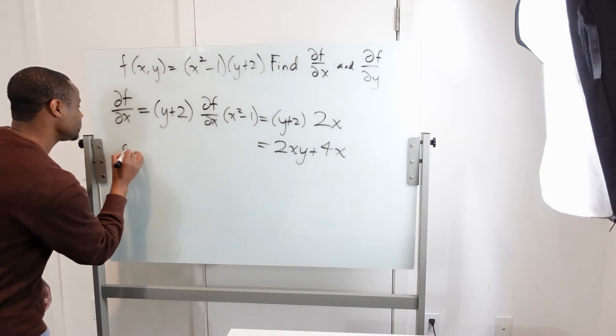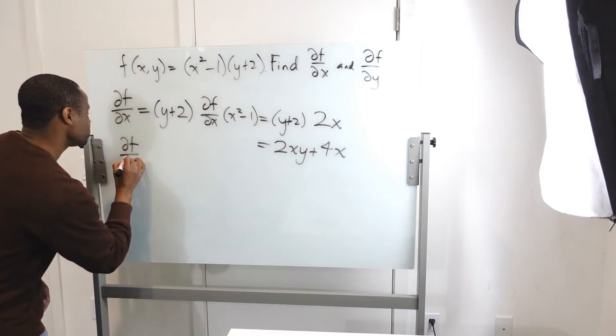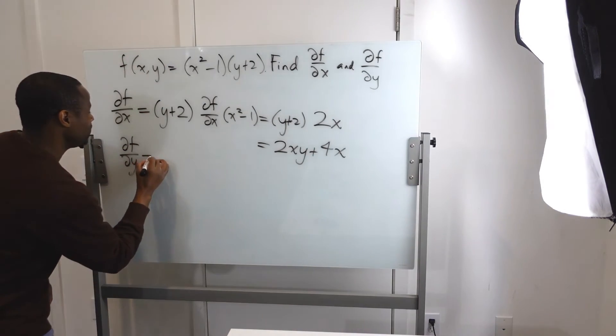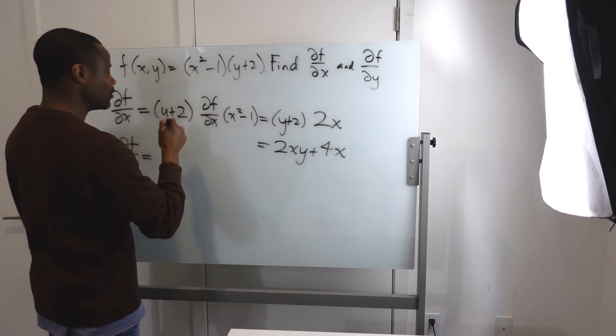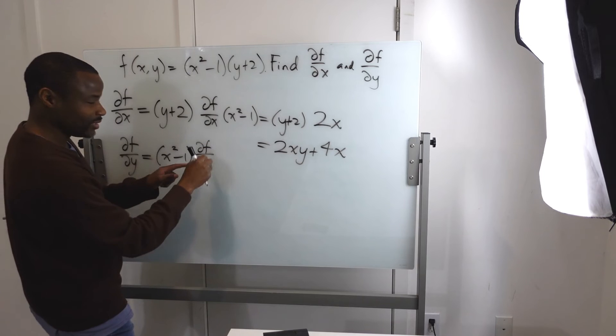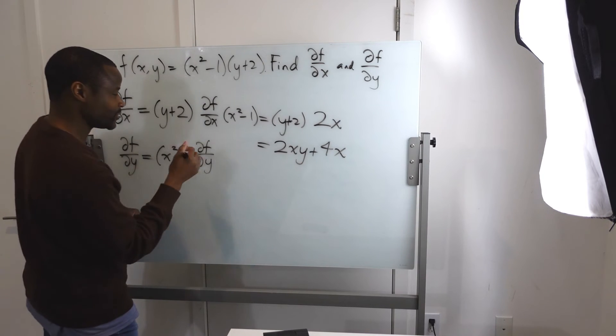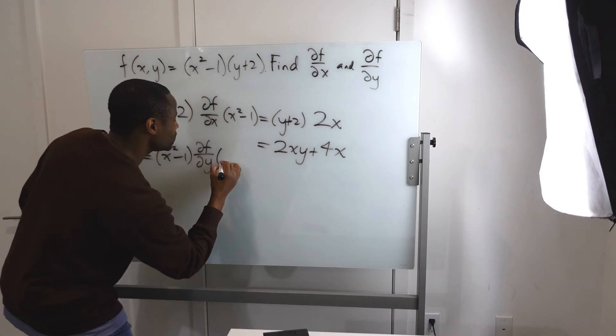Now, partial derivative of f with respect to y. Same idea, but now worry about the y's. This is a constant, so pull it out. x squared minus 1 times the partial derivative of f with respect to y of the y plus 2.